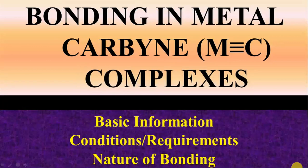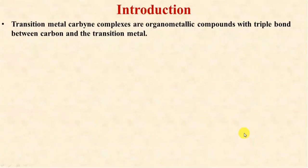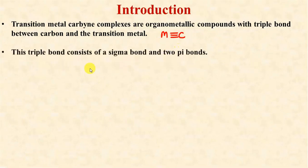Hello students. In today's lecture we will discuss the bonding behavior of metal carbyne complexes. These are complexes in which there is a metal-carbon triple bond. Metal carbyne complexes are organometallic compounds as they contain a direct metal-carbon bond, and the metal is triply bonded to the carbon atom. This triple bond consists of one sigma bond and two pi bonds.